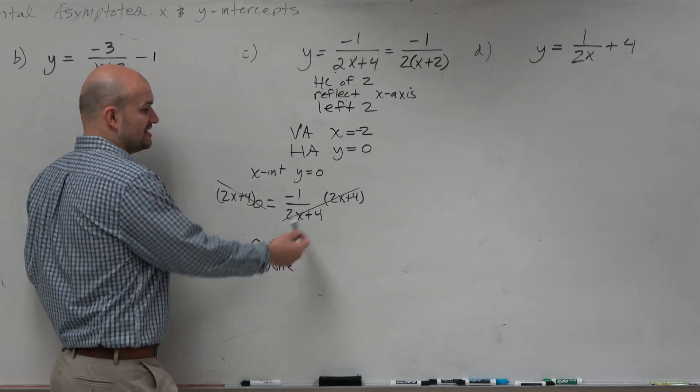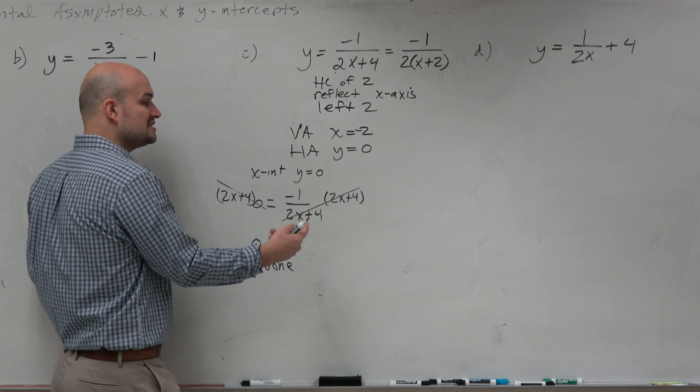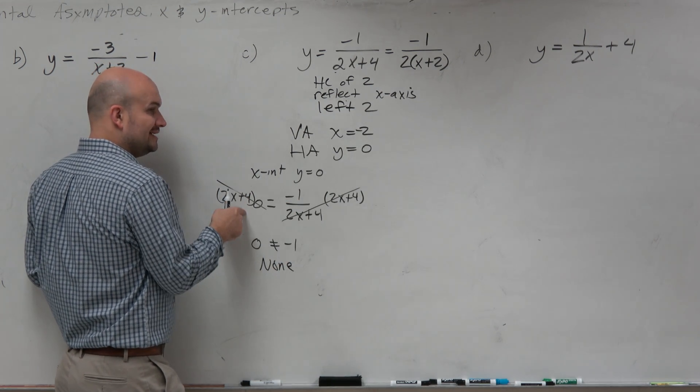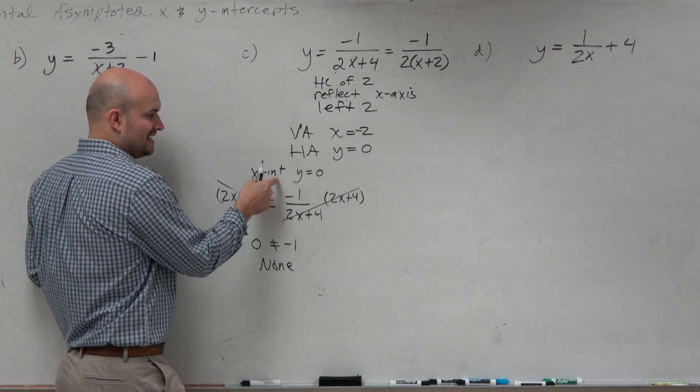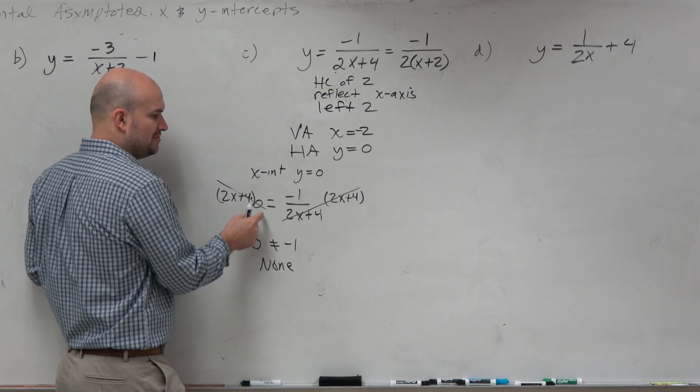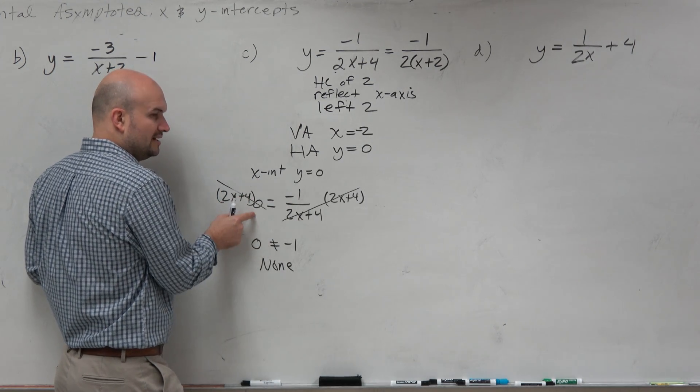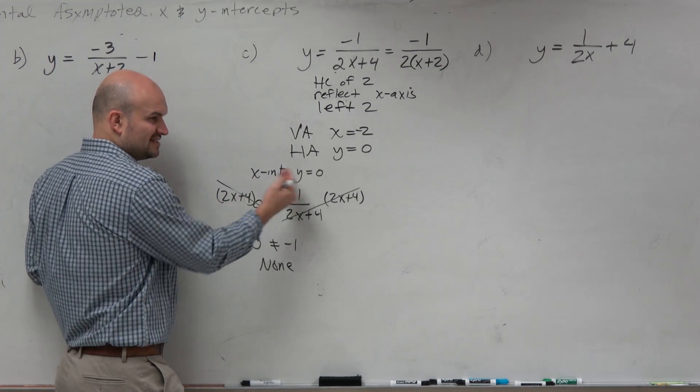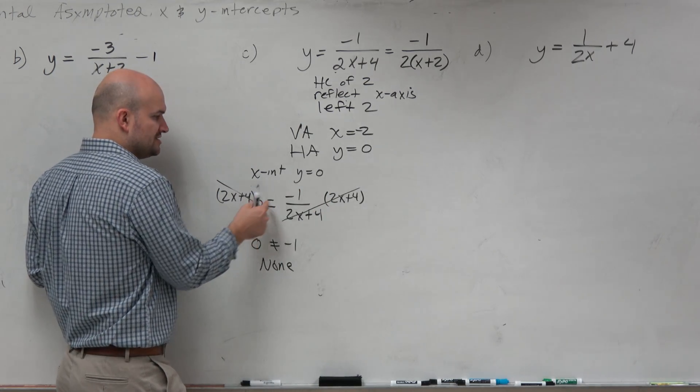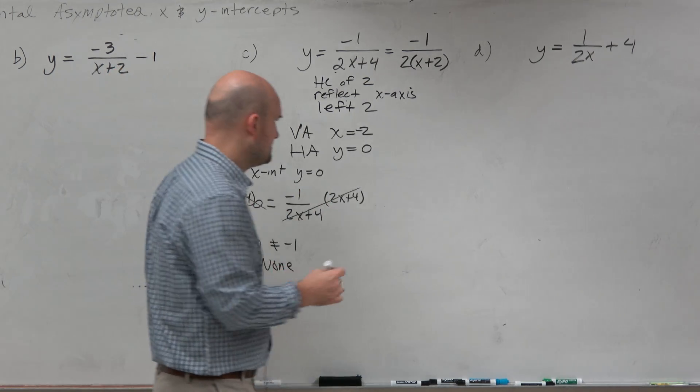But the main important thing I want you guys to realize with this is when you have a rational expression equal to 0, and you want to find the x-intercept, you're basically just to solve, you basically just set the numerator equal to 0. And you can just kind of skip all of this work and just go 0 equals numerator. And we'll do more examples of that.